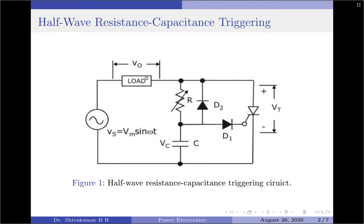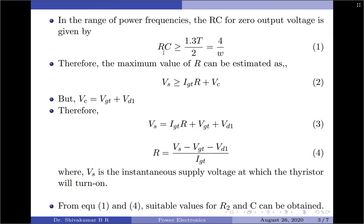During the negative half cycle of the input supply, the diode D1 prevents the breakdown of the gate to cathode junction — this is used to make sure no negative voltage reaches the gate terminal of the SCR. In the range of power frequencies, the value of R and C for 0 output voltage is given by RC must be greater than 1.3 times capital T divided by 2, which equals 4 divided by omega, where capital T equals 1 divided by F is the period of the AC line frequency in seconds.